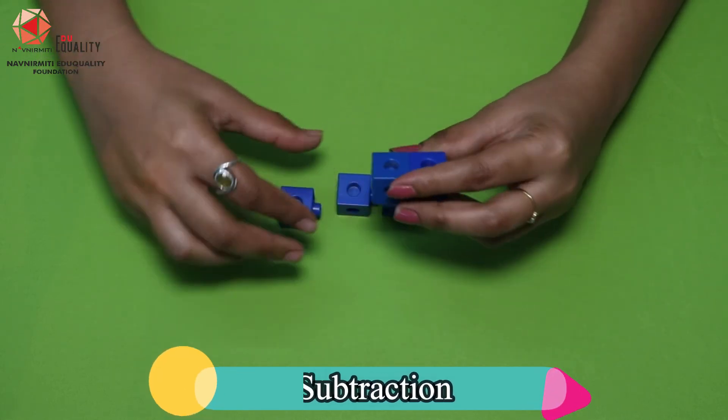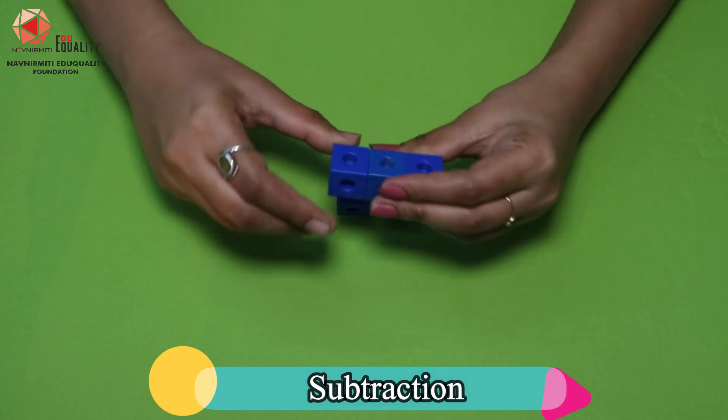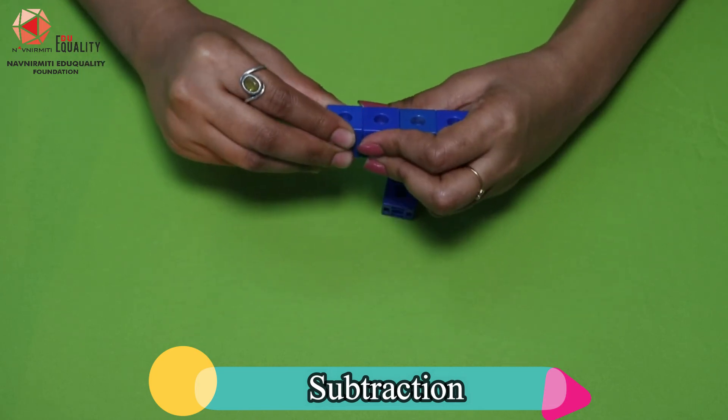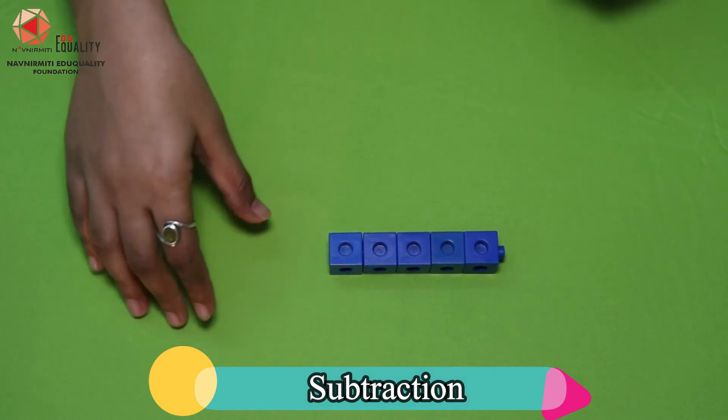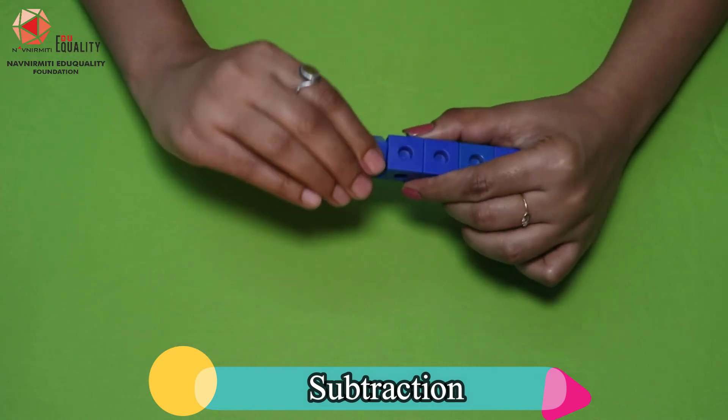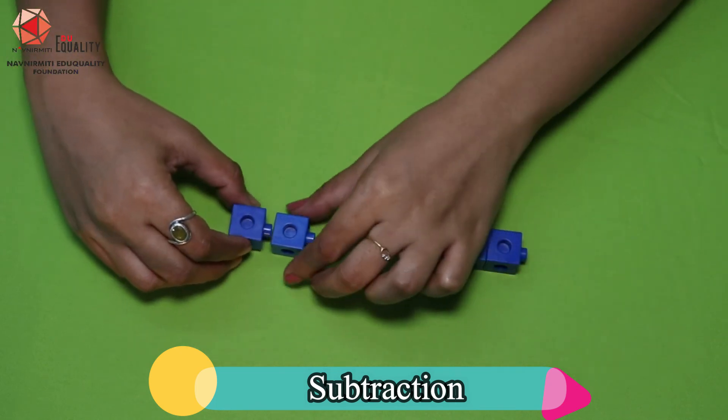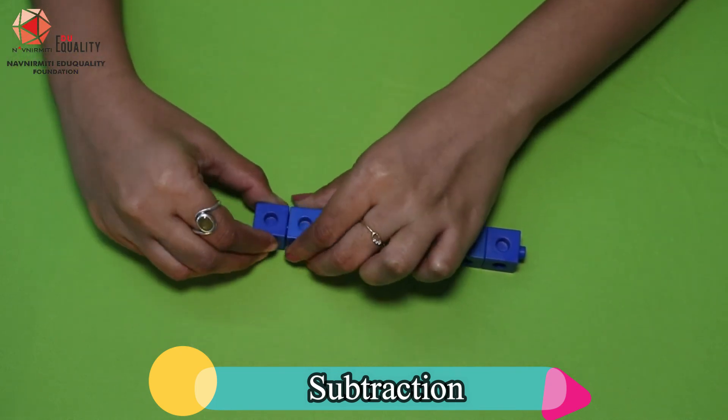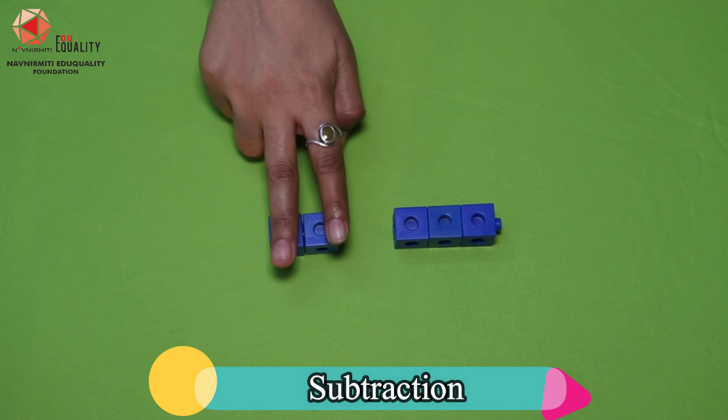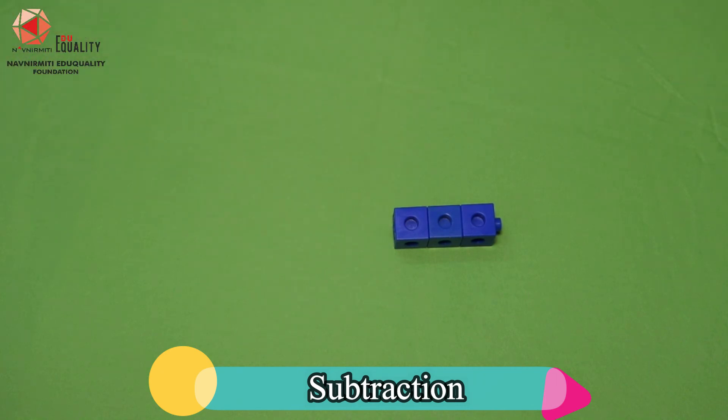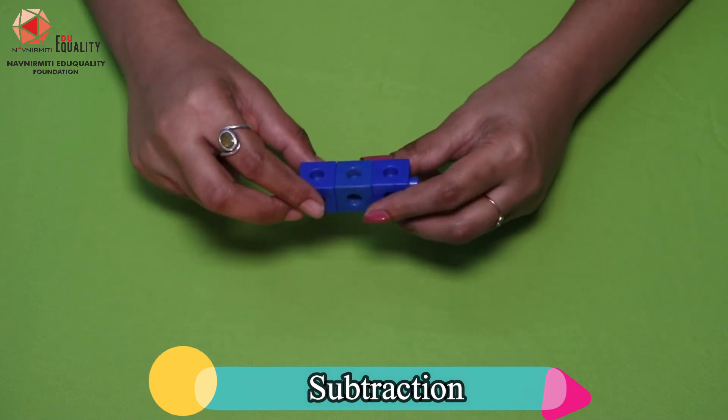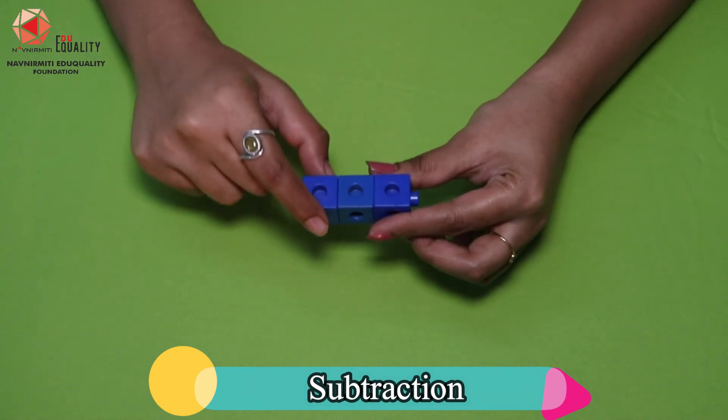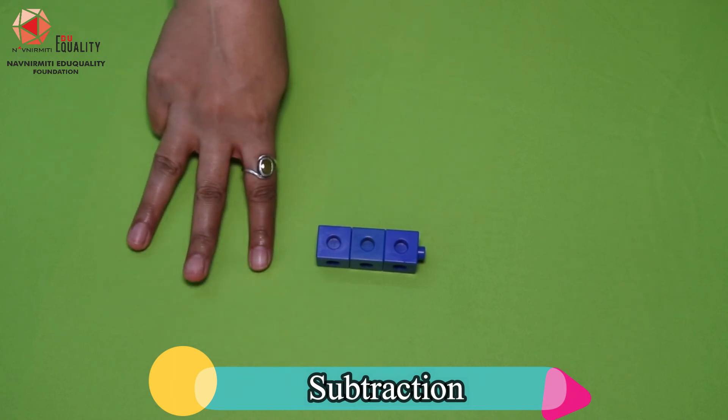Let's count the blue blocks. 1, 2, 3, 4, and 5. Now we take out 2 blocks from 5. If we take out 2 from 5, let's see how many blocks we're left with. 1, 2, and 3. So 5 minus 2 equals 3.